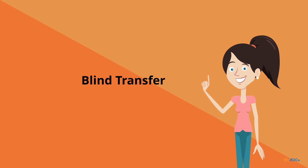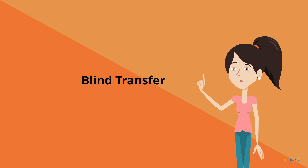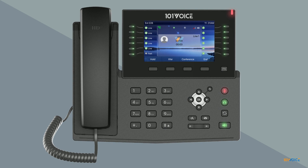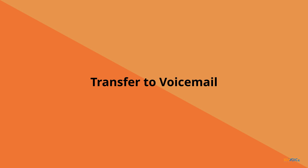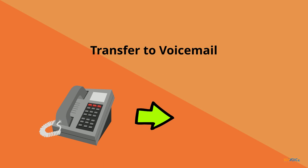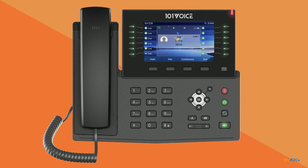Now, let's look at how to do a blind transfer. The procedure is very similar. First, press the transfer soft key, then enter the number or extension for the second party, as you would for an attended transfer. But instead of pressing dial, simply press transfer again to complete the transfer. Finally, to transfer to voicemail, press the transfer soft key, then dial star 8 followed by the mailbox number, then press transfer again to complete the transfer. This allows you to transfer a caller directly to another user's mailbox without ringing the phone.